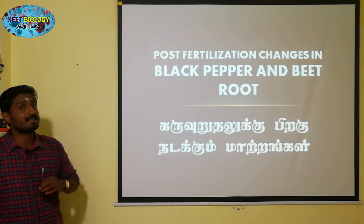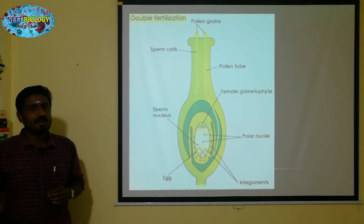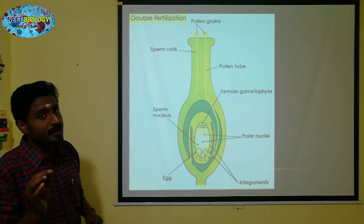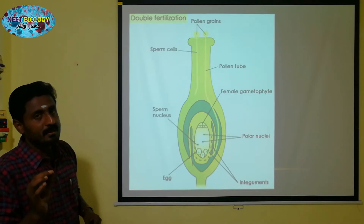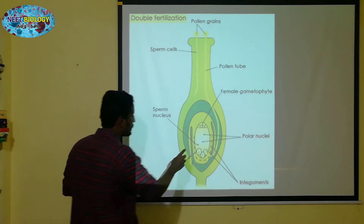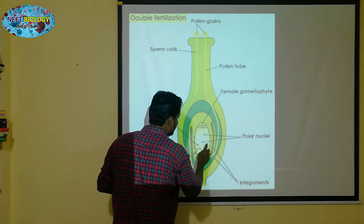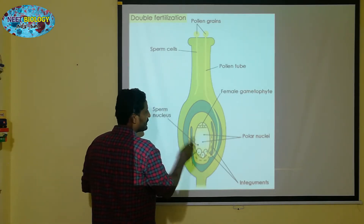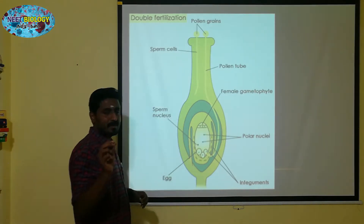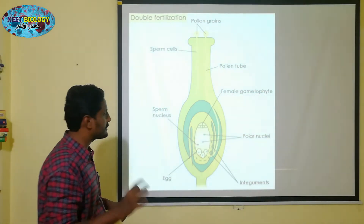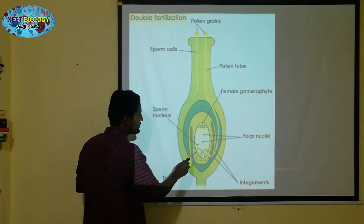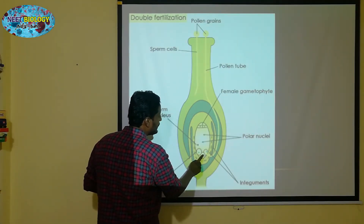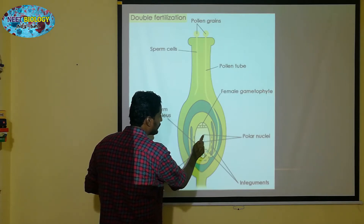After the fertilization, we will show you the primary endosperm nucleus form — the first one. This is the primary endosperm nucleus, formed from the fusion of polar nuclei and the pollen tube. What do you know about double fertilization? There are two male gametes — one fuses with the egg cell and one with the polar nuclei.